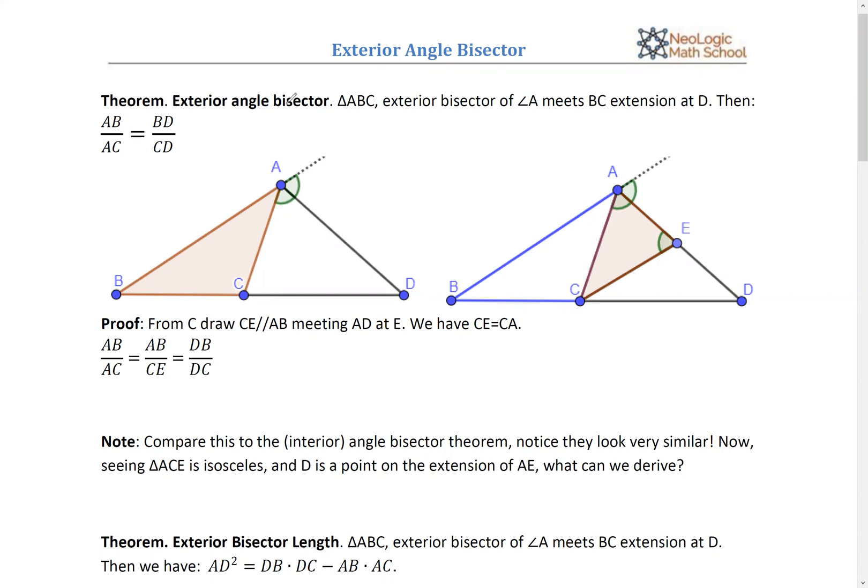Hopefully this is not new to you. For example, given triangle ABC, this is the exterior angle for angle A, and then I could draw an angle bisector here, such that it will meet the extension of BC, right? It meets BC at point D. Okay, exterior bisector.